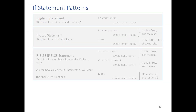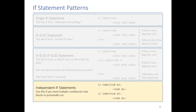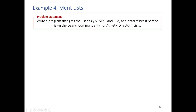For our fourth and final pattern, we're going to show you a situation where you may not need if-else or elif — you might just need a lot of separate if statements. Here's a program where you get a GPA, MPA, and PEA from the user and determine if the user is on the Dean's, Commandant's, and/or Athletic Director's list. The important thing is that whether you're on the Dean's list or Commandant's list are independent things — there's nothing about the Dean's list that tells you if you're on the Commandant's list. So these are independent if statements.